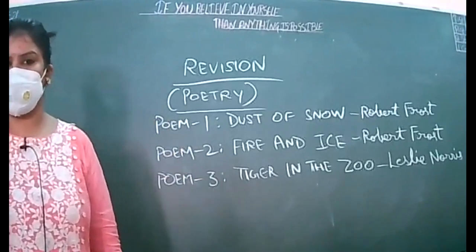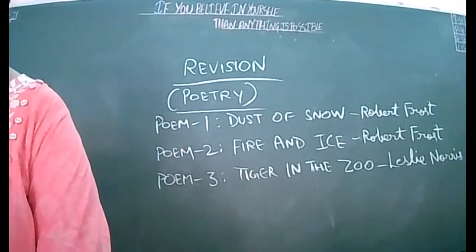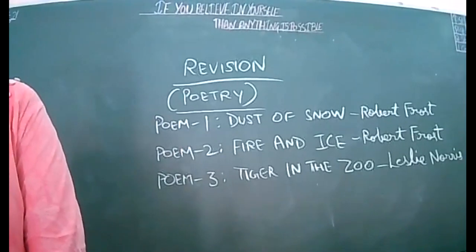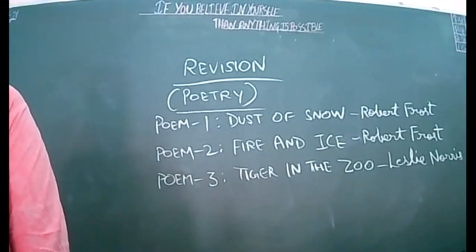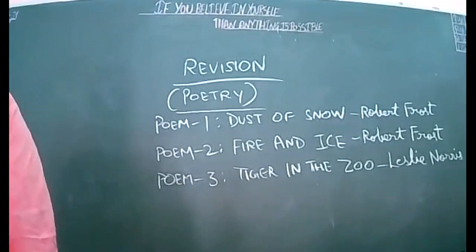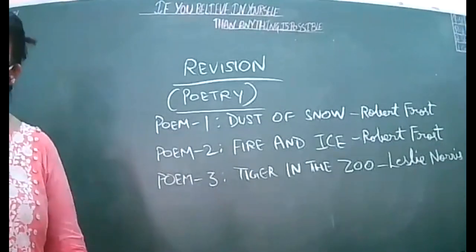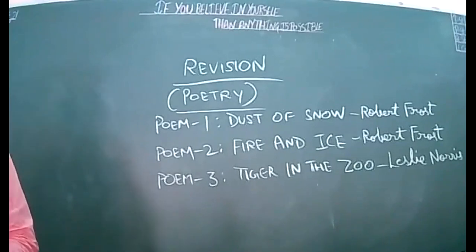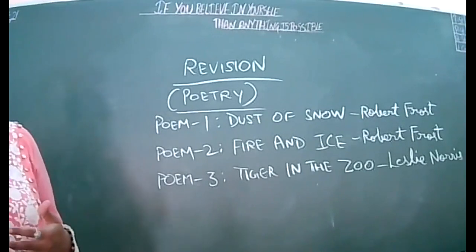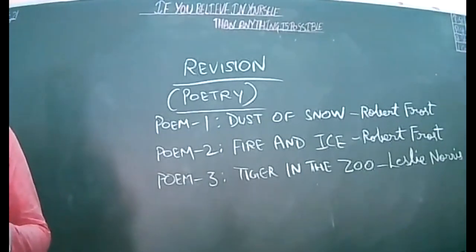We'll be doing the gist of all the poems and then MCQs, clear? In the first poem, Dust of Snow, which is written by Robert Frost, a poet based on nature who has projected simple ideas and turned them into beautiful thoughts. Dust of Snow is a very small poem written by an American poet.